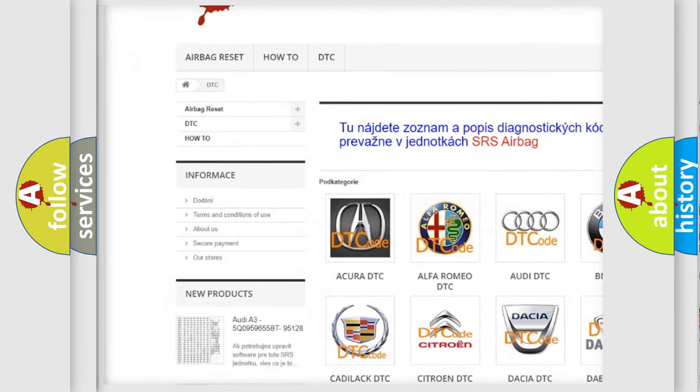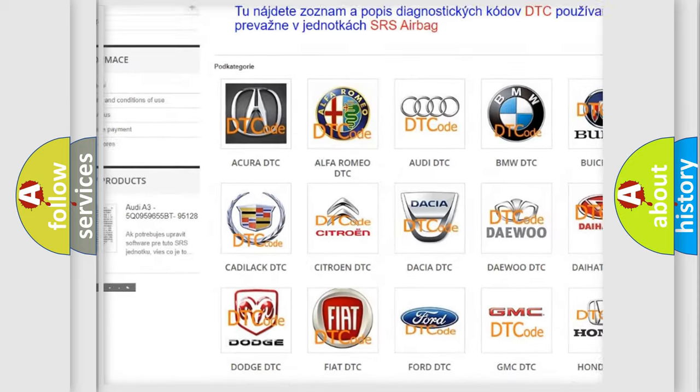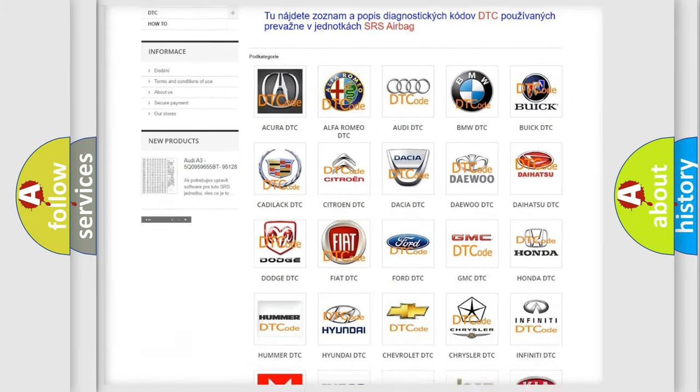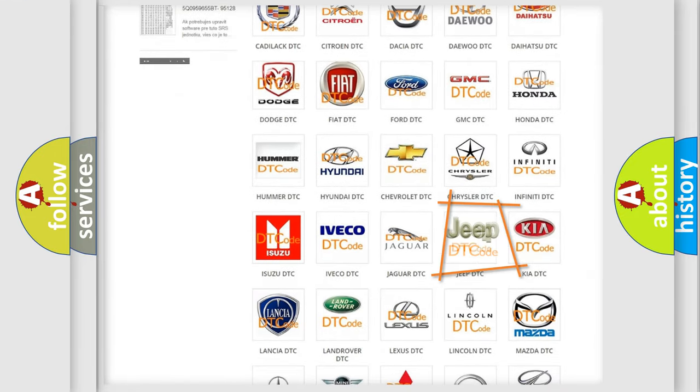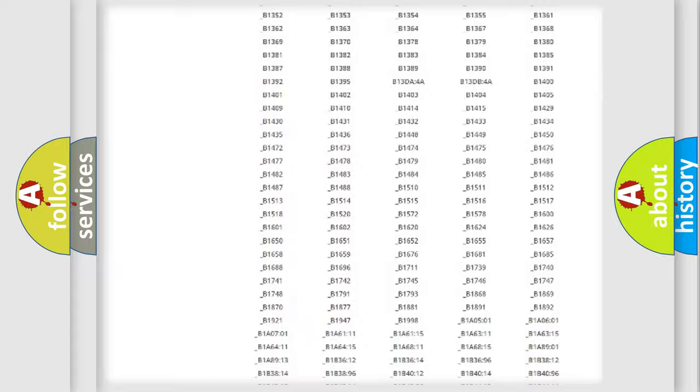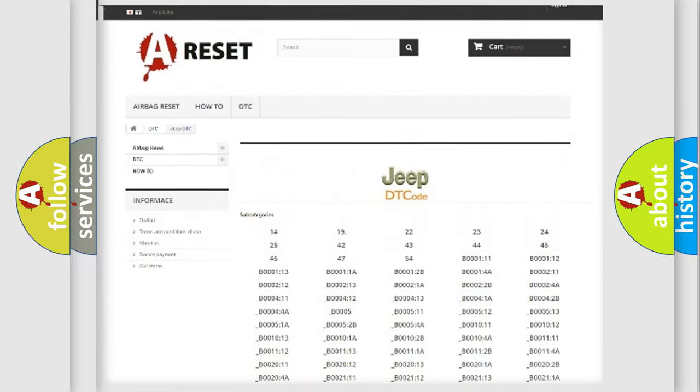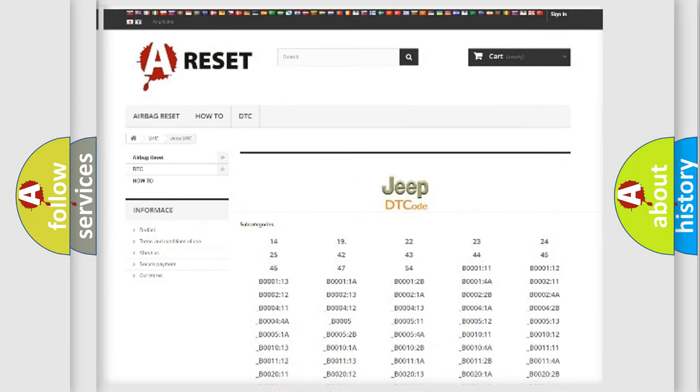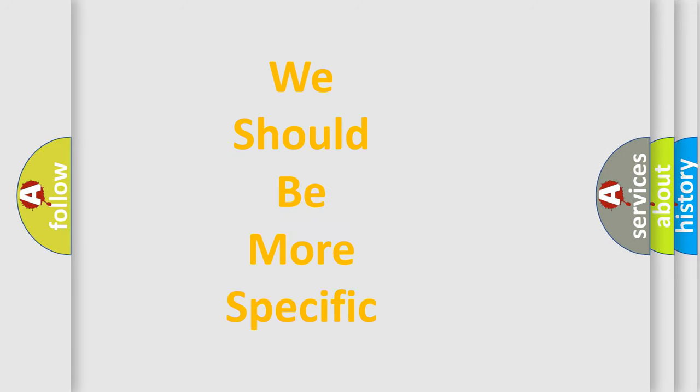Our website airbagreset.sk produces useful videos for you. You do not have to go through the OBD2 protocol anymore to know how to troubleshoot any car breakdown. You will find all the diagnostic codes that can be diagnosed in Jeep vehicles, and many other useful things. The following demonstration will help you look into the world of software for car control units.